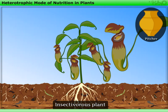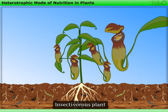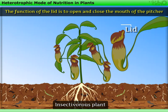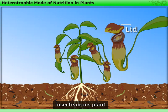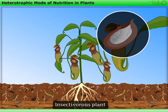Let us study the parts of the pitcher plant. The leaf of this plant is modified in the shape of a pitcher. The apex of the leaf forms the lid, whose function is to open and close the mouth of the pitcher. Inside the pitcher there are hairs which are directed downwards.